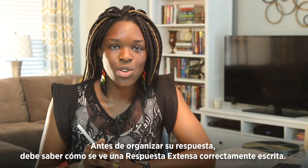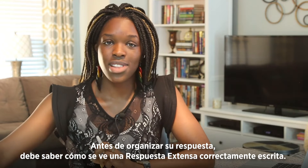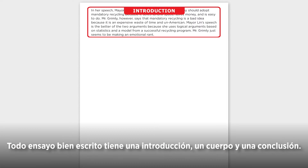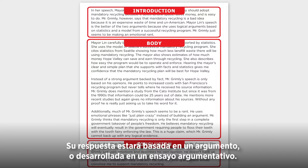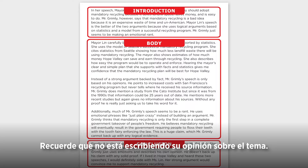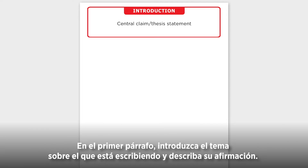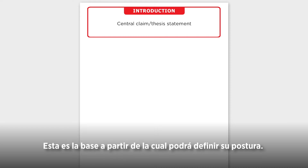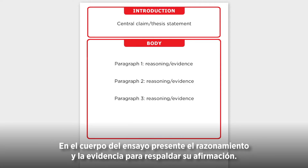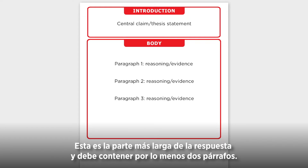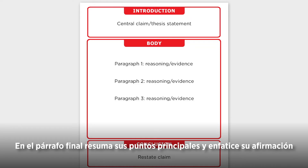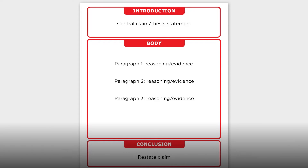Before you can plan your response, you should know what a good extended response looks like. Every well-written essay has an introduction, a body, and a conclusion. Your response will be an argumentative essay. Remember that you are not writing your opinion on the topic — you are writing an analysis of two authors' positions and explaining which argument is stronger. In the first paragraph, introduce the topic and state your claim. The body presents reasoning and evidence to support your claim, and should be at least two paragraphs. The concluding paragraph sums up your main points and restates your claim.